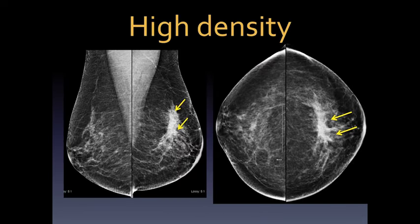Tangential views for skin calcifications can be done to confirm they are in the skin. This patient had very faint calcifications, and the technologist got a tangential view showing them in the skin, confirming the tattoo sign of skin calcifications. When you see typical lucent-centered calcifications, however, it's not essential to obtain tangential views — you can characterize them as typically benign.